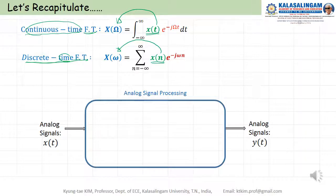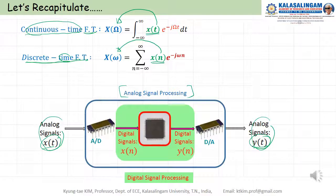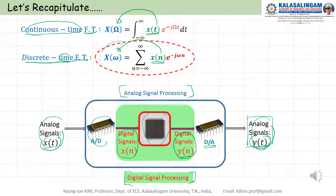Analog signal processing means both input and output are continuous time signals, X of T and Y of T. Digital signal processing means we convert analog to digital, process the digital signal X of N, produce digital signal Y of N, then use a digital-to-analog converter to finally get the analog signal. The important thing here is that for digital signal processing we need to focus on the discrete time Fourier transform.